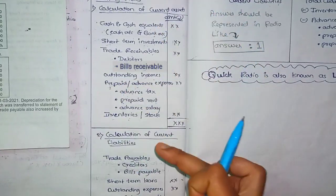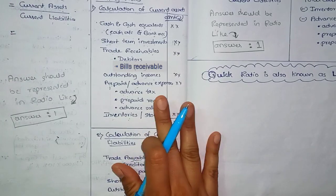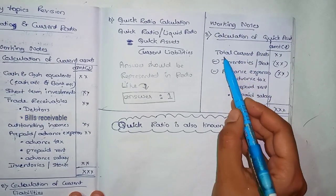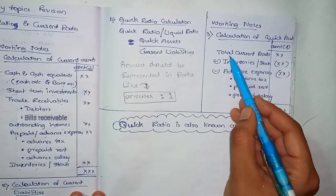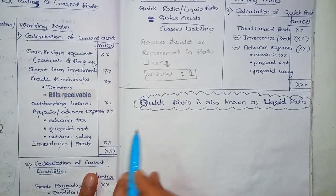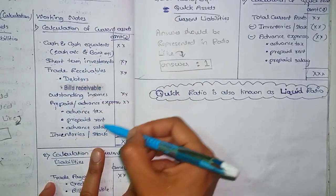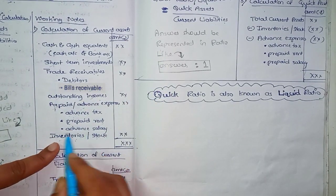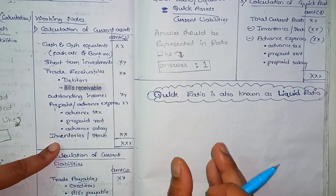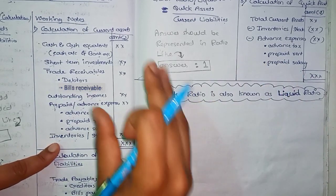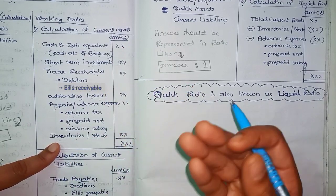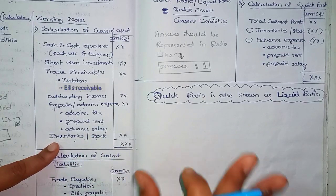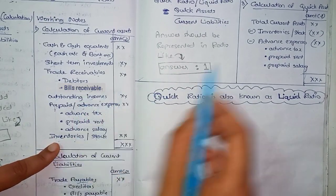First, find current assets and current liabilities and divide them for the current ratio. Then calculate the quick asset as a second working note. Quick asset means assets that are easily convertible into cash. Inventory or stock cannot be easily converted into cash, so it is not considered a quick asset.